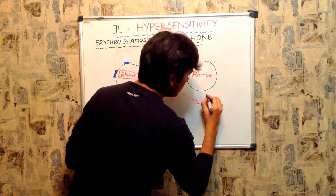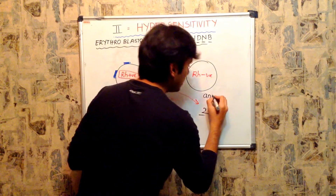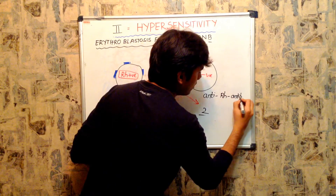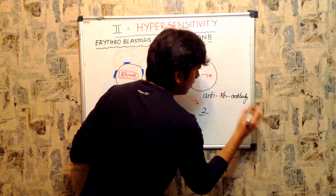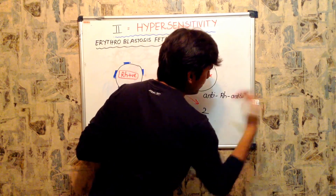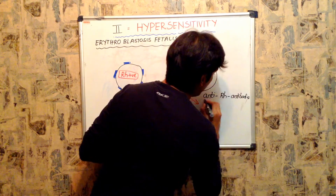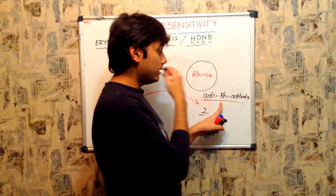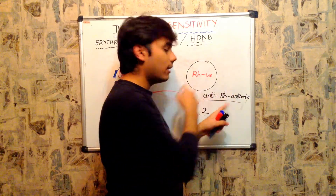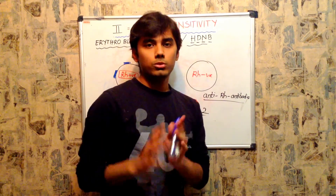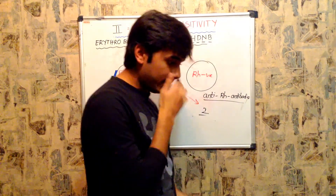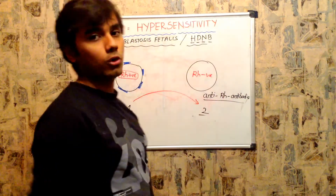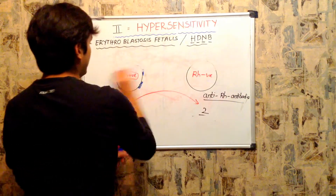This is the exact concept that applies to erythroblastosis fetalis. The anti-RH antibodies produced attack the RH positive cells and cause coagulation. This mechanism is central to understanding how erythroblastosis fetalis develops.